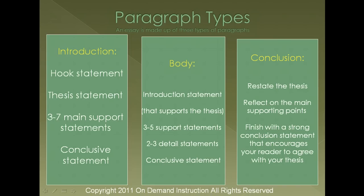There are three different types of paragraphs that you will use as you're working through your essays. An essay will always start with an introduction paragraph. Some of the sentences you would expect to include are a hook statement, a thesis statement, a range of three to seven main support statements, and a conclusion statement. There will always be multiple body paragraphs in an essay, and the number depends upon how much information you have and how long the essay is expected to be. A body paragraph will include an introduction statement that supports the thesis, three to five support statements, two to three detail statements, and a conclusion statement.